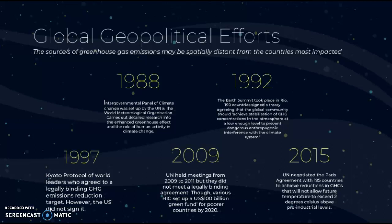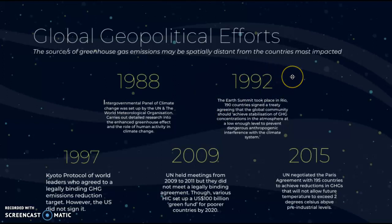Starting in 1988, the Intergovernmental Panel on Climate Change was set up by the UN and the World Meteorological Organization. They carry out detailed research into the enhanced greenhouse effect and the role of human activity in climate change. Then in 1992, the Earth Summit took place in Rio, where 190 countries signed a treaty.